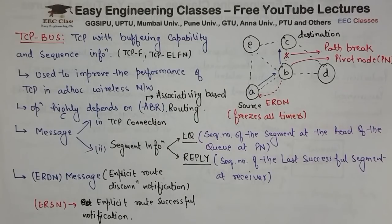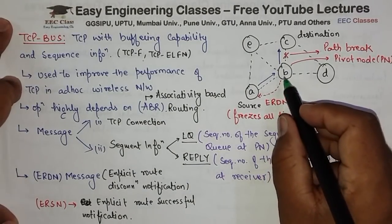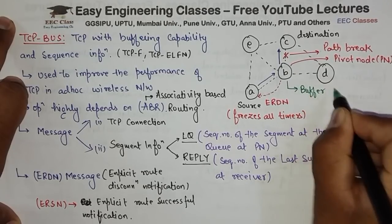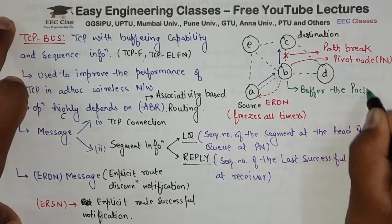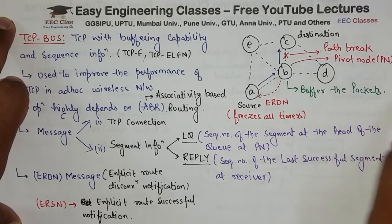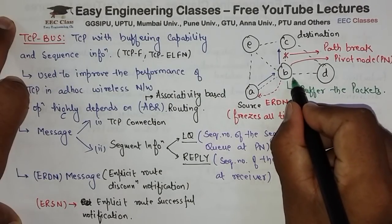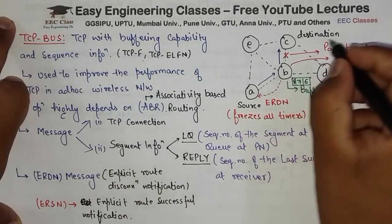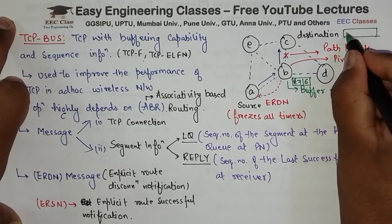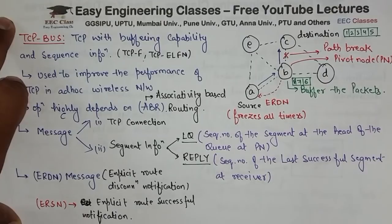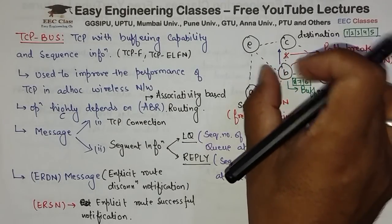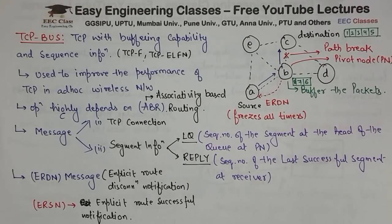Ab dekho yahan pe jo buffering ki baat aa rahi hai woh kya hai. Jaise hi is ne detect kiya ki path break ho gaya, we will buffer the packets. Matlab ki jo pivot node B hai, woh kuch packets buffer mein rakh leta hai. So let us say B ke andar jo packets ki sequencing hai buffer mein woh kuch is tarah se hai: 6, 7 aur 8 — 8 head pe hai. Aur jo destination tak pahunch chuke hain woh 1, 2, 3, 4 pahunch chuke hain. Jaise hi path break hua, ERDN message bhej diya, source ne sab kuch freeze kar diya, koi bhi packet aagay nahi bhejega.